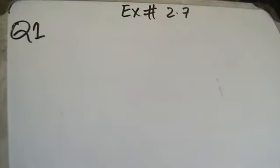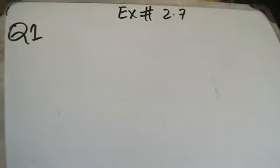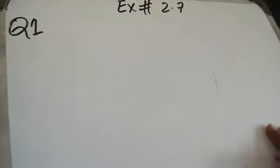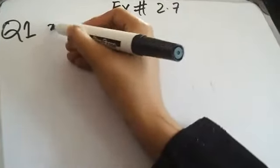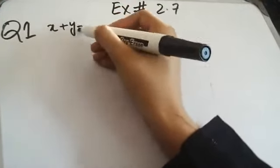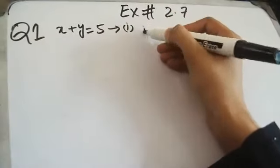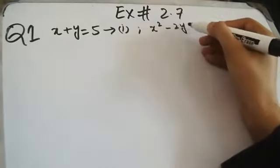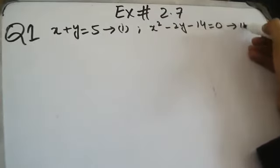Let's look at question number 1. The first equation is: x plus y is equal to 5 — call this equation 1. The second equation given is: x squared minus 2y minus 14 is equal to 0 — call this equation 2.